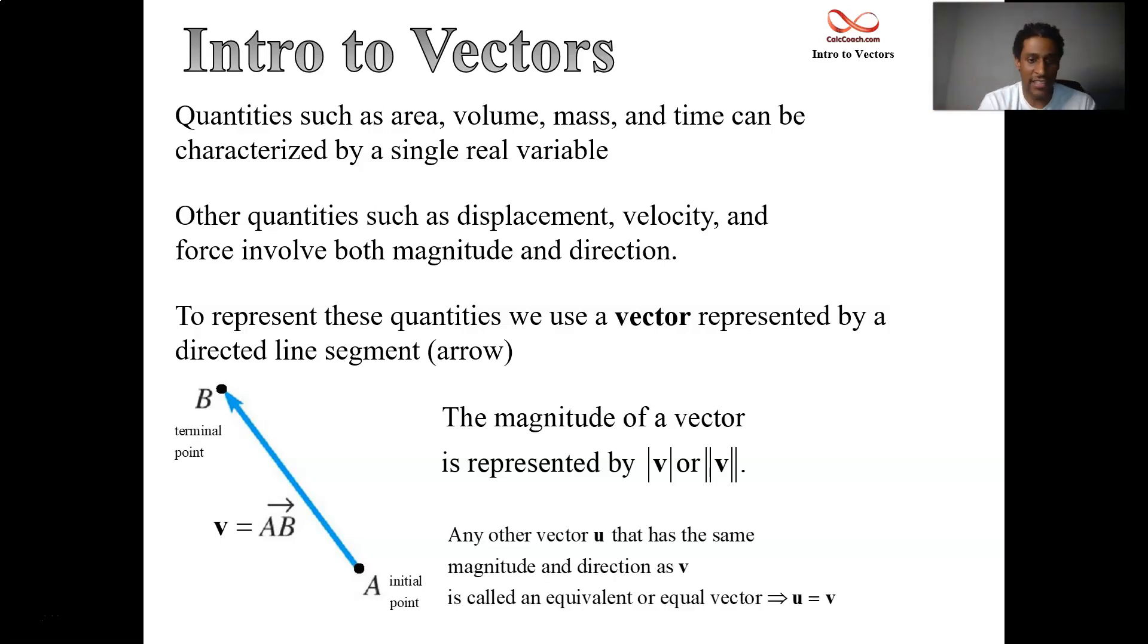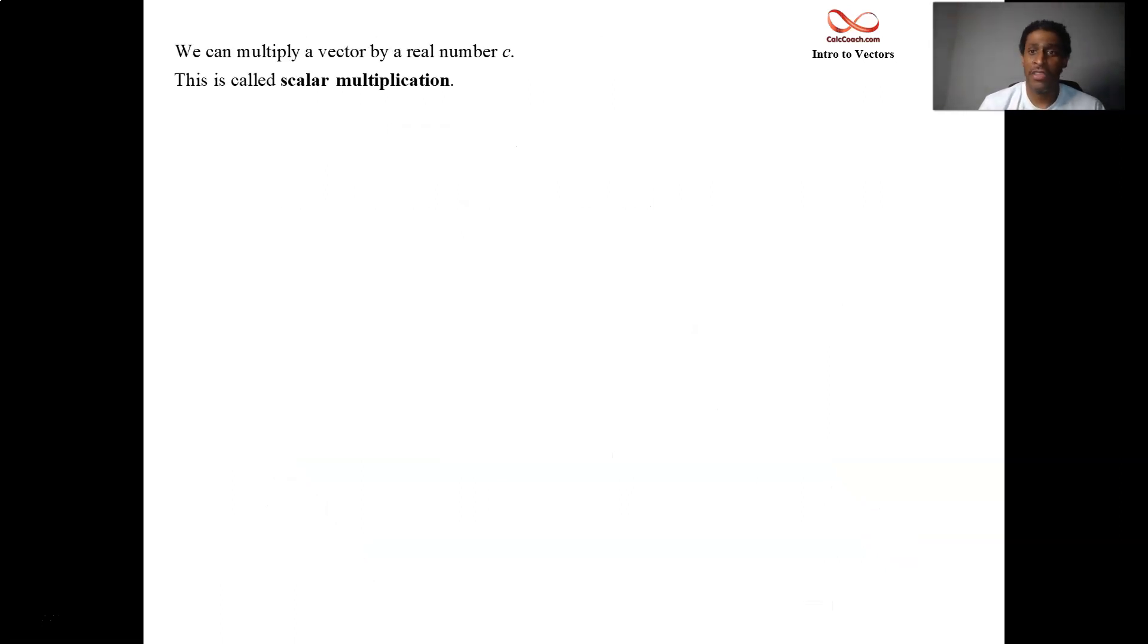So it's the magnitude and the direction which basically define the vector. Any vector that has this, any other vector that might have a different name at first, but has the same magnitude and the same direction, then those two vectors are the same. They are equivalent, equal to each other. All right, great. What do you do with vectors? Well, we're going to first scale a vector. Multiply a vector by a real number.